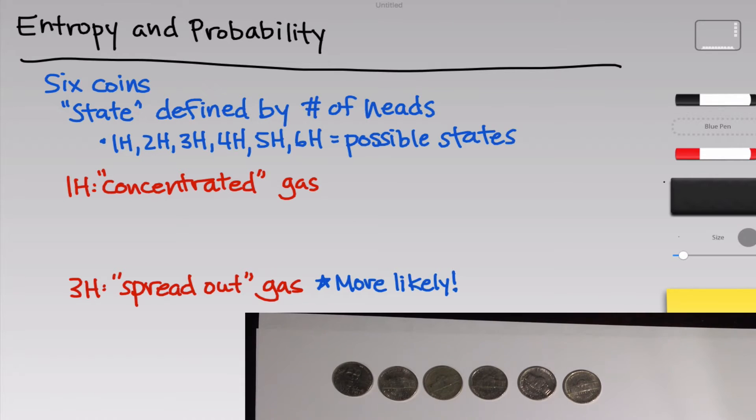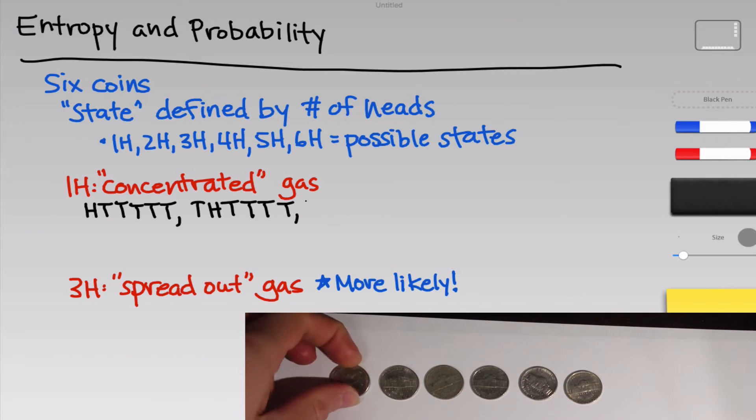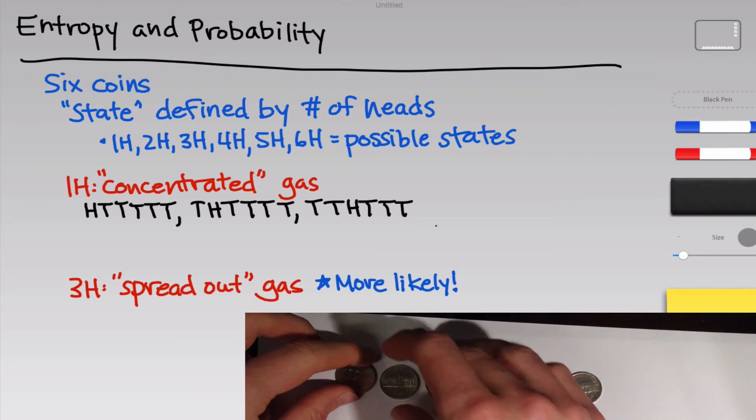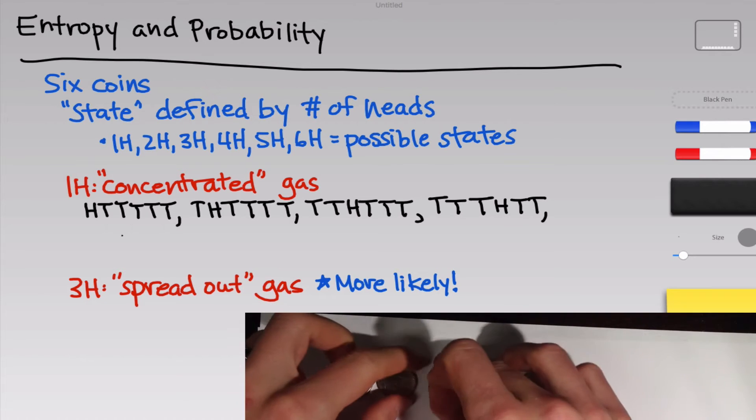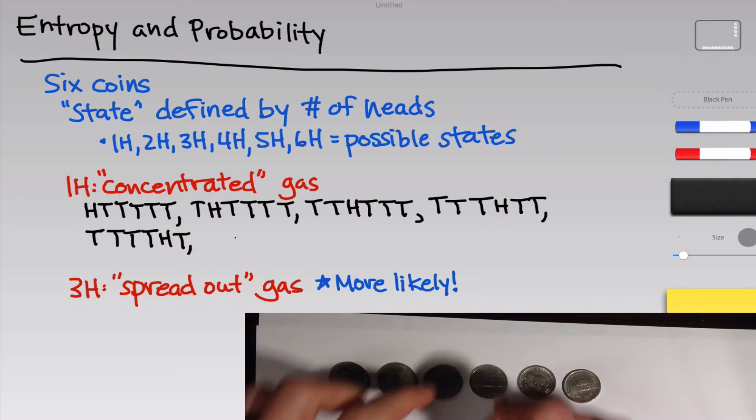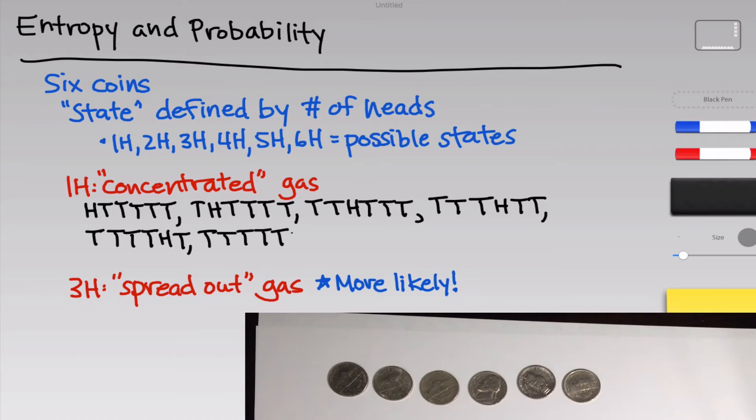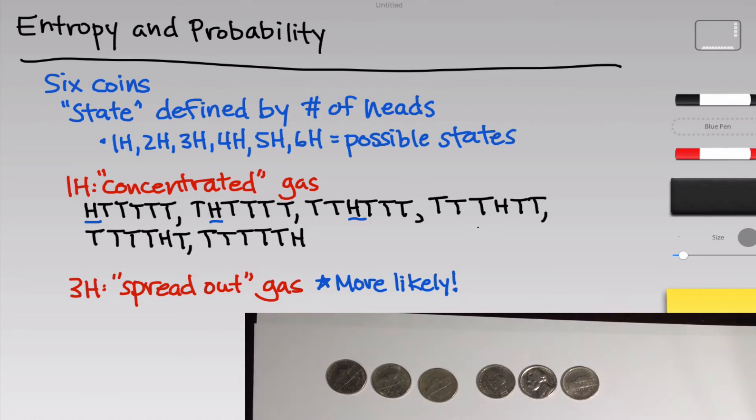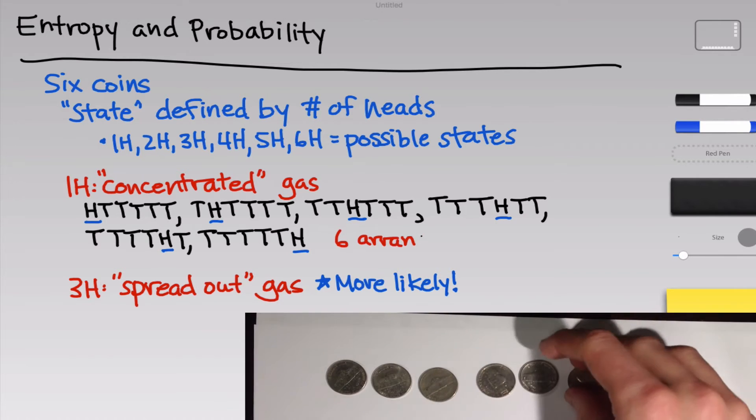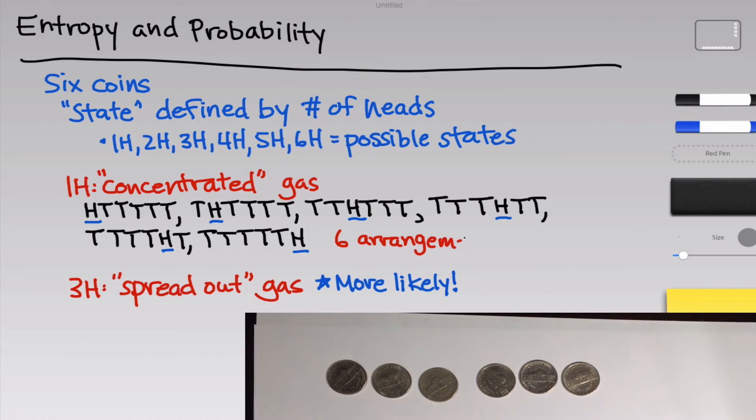We can demonstrate this by enumerating the possibilities and thinking about probability and combinatorics. For the one head state, this is fairly easy. We have the six nickels, all tails, and to generate the one head states, we can simply flip over each coin. We can flip over the first coin, that's one possibility, one possible arrangement. We can flip over the second, that's another possible arrangement, the third, yet another, the fourth, the fifth, and the sixth. From this, we can see that there are six arrangements that correspond to the one head state. Mathematically, this is equivalent to the combination six things taken one at a time, which corresponds to six.